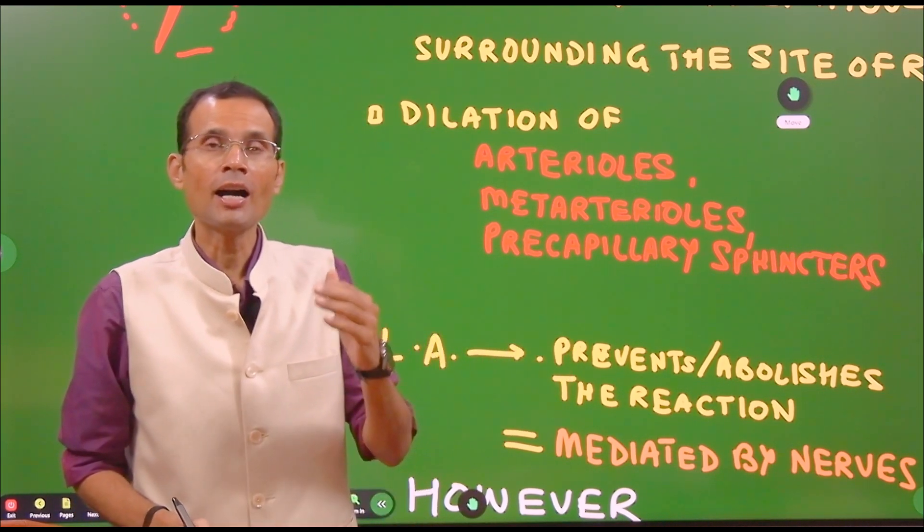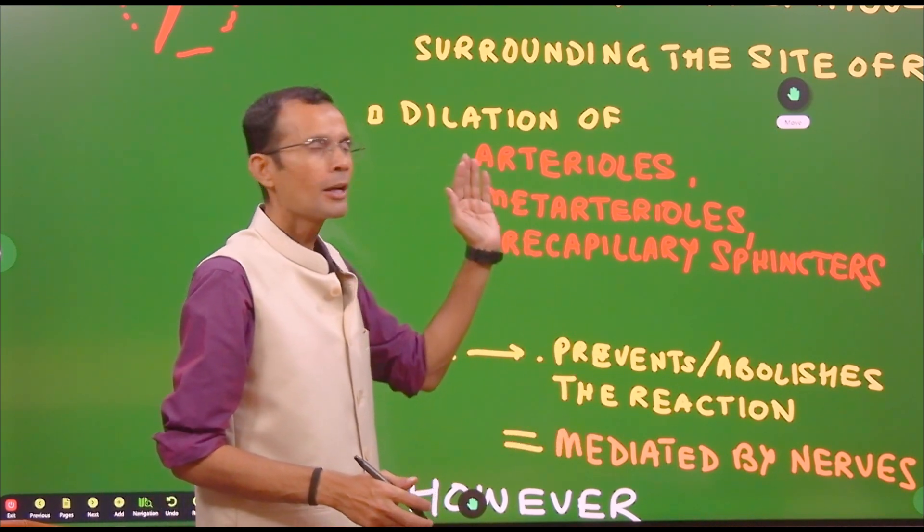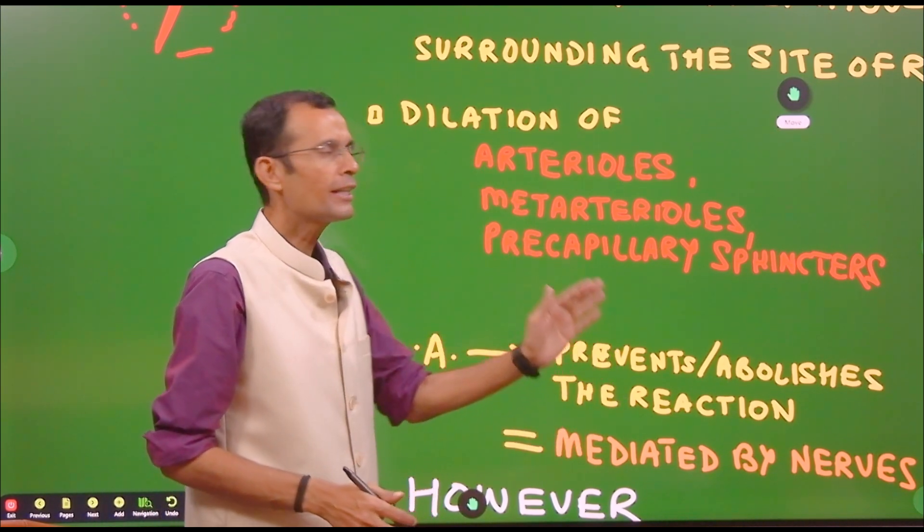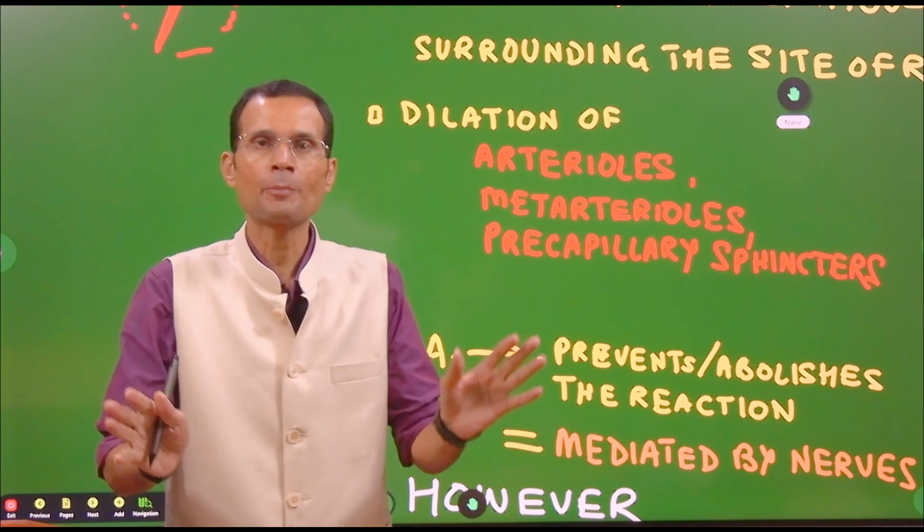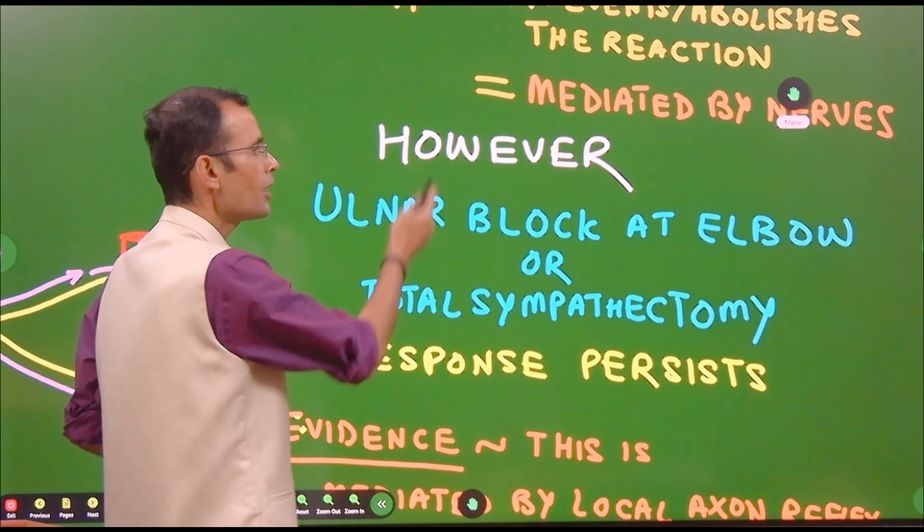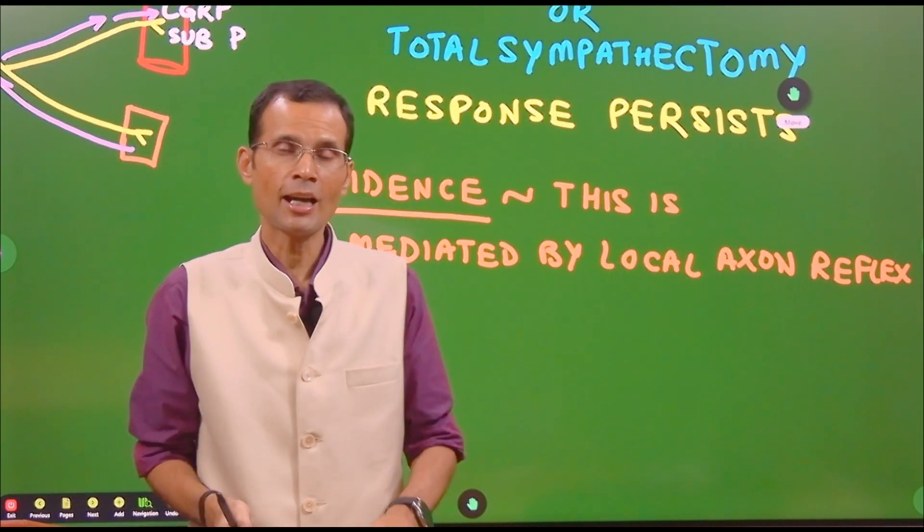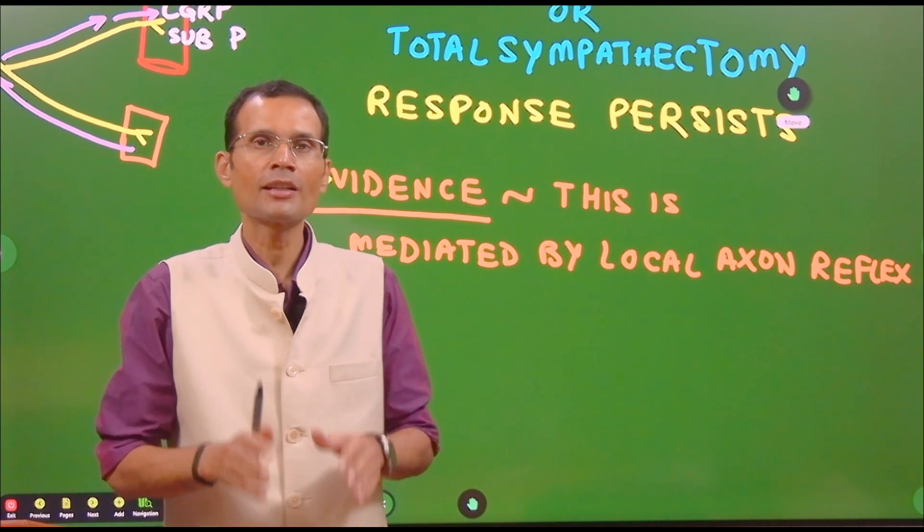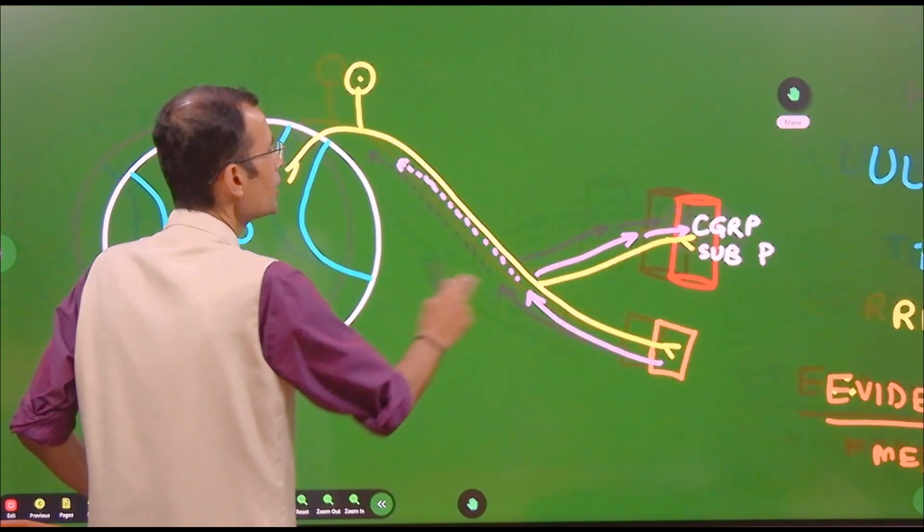This is caused by dilation of the arterioles. This time the arterioles got involved. Dilation of the arterioles, metarterioles and precapillary sphincters. And that is how there was a flare up. The question is whether nerves were involved in this time, in this reaction. The answer is yes. How the nerves got involved?